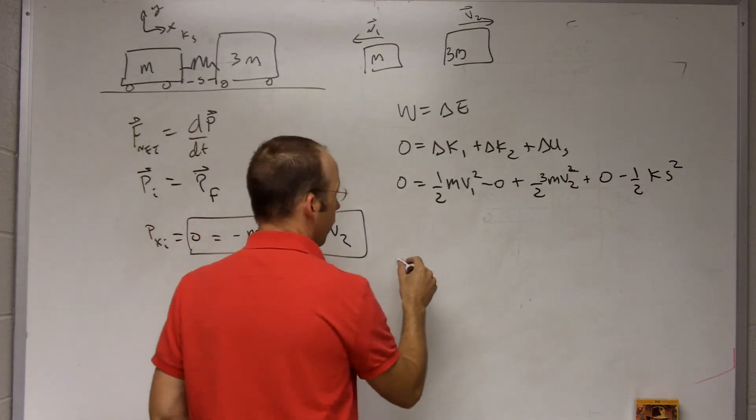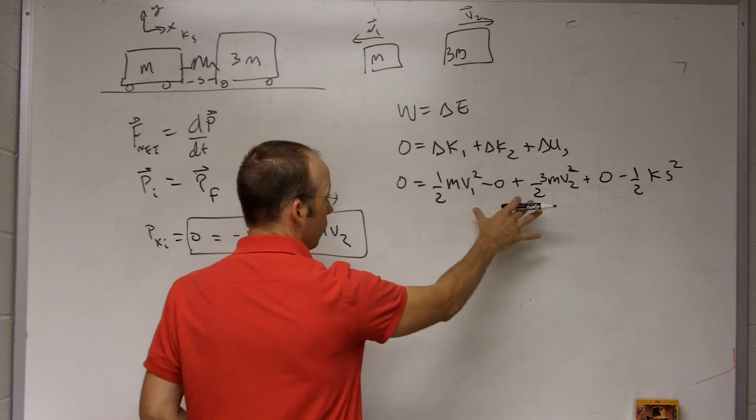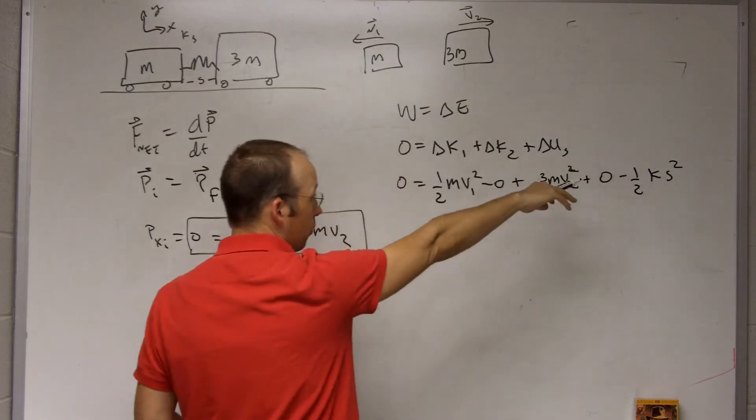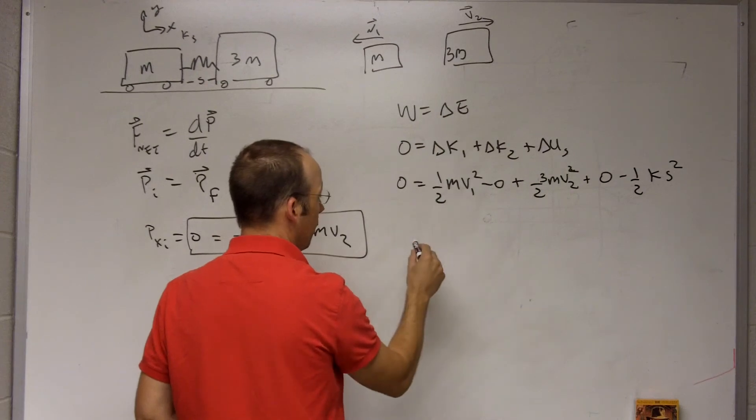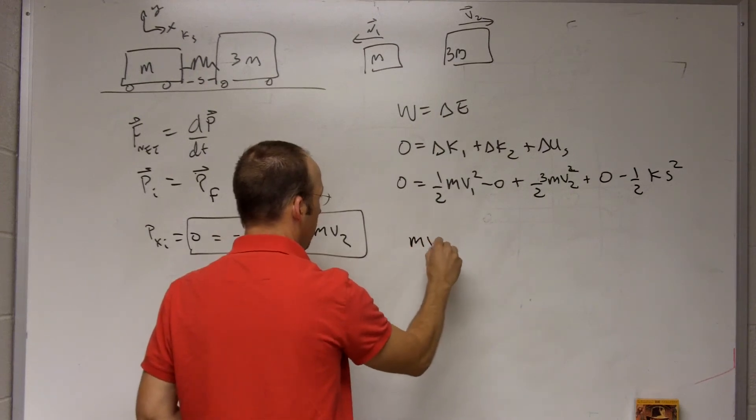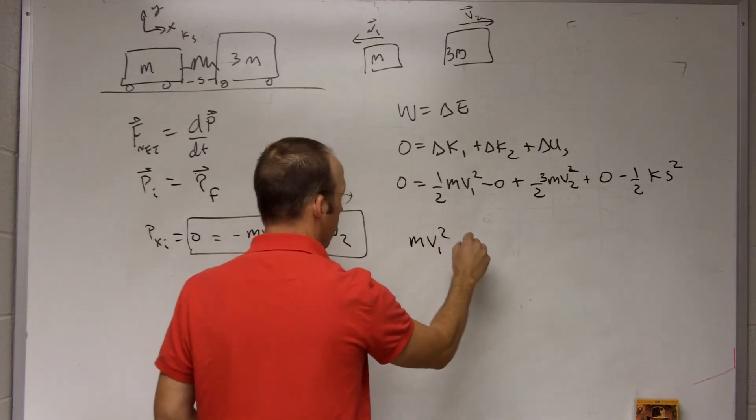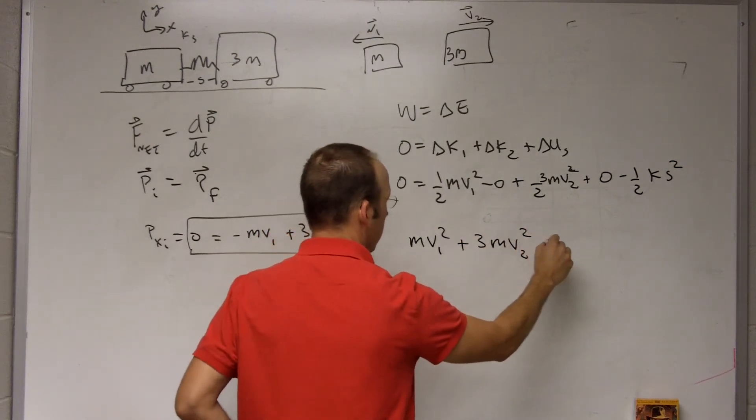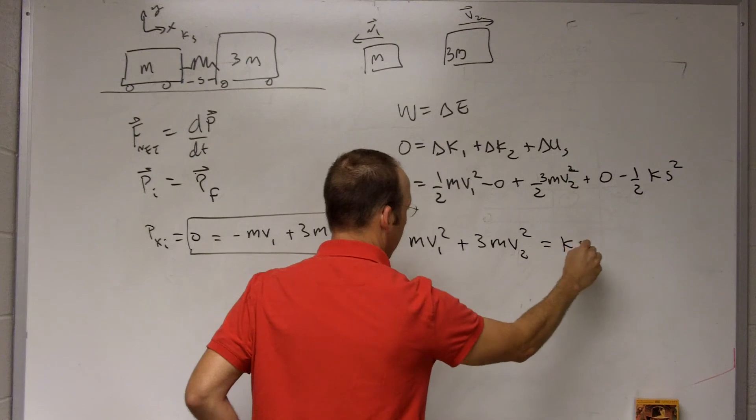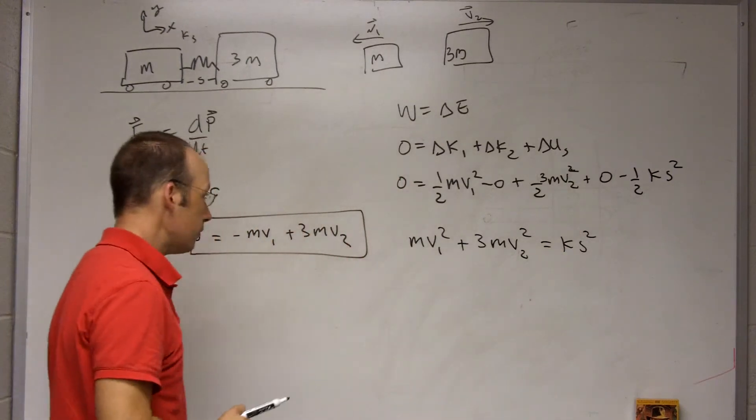Let's just simplify this. I'm going to move the one-half KS squared to the other side, and I'm going to multiply everything by two. So I get MV1 squared plus 3MV2 squared equals KS squared.